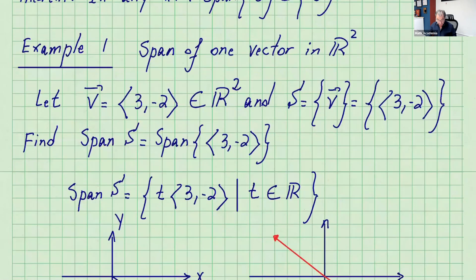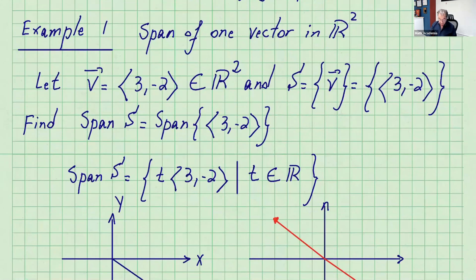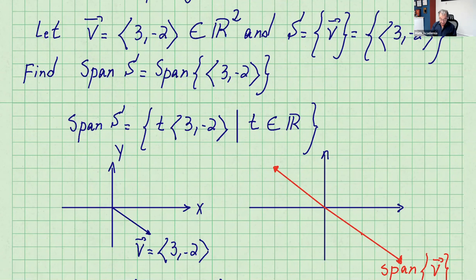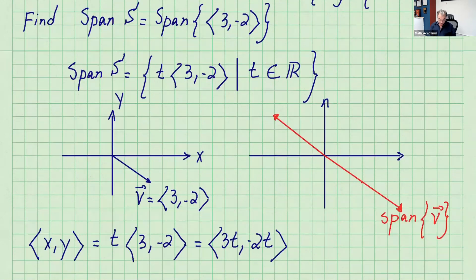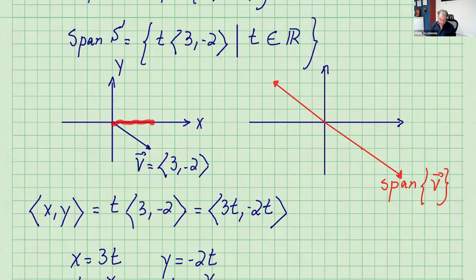I did some examples for you so you can understand what the span of vectors or a vector set is. If we take a vector in R2, the components are 3, -2. We're in R2 because we have two components. S, our set, is just that vector. The question is, what is the span of that set or span of that vector? I'll talk about that in a second.